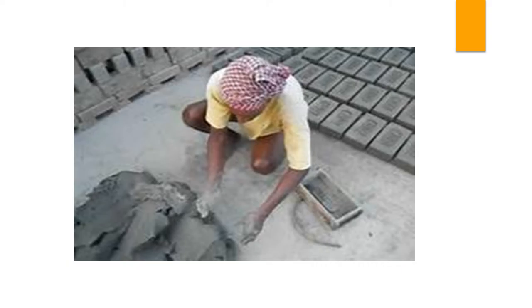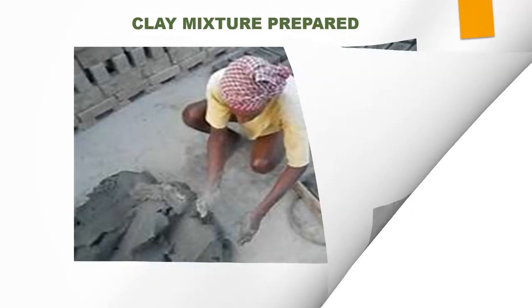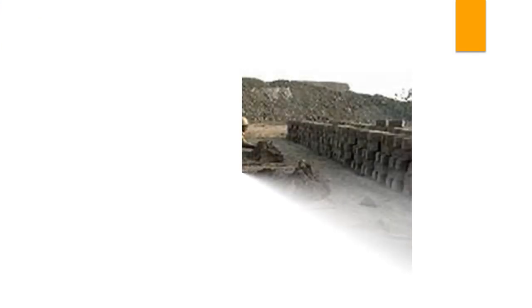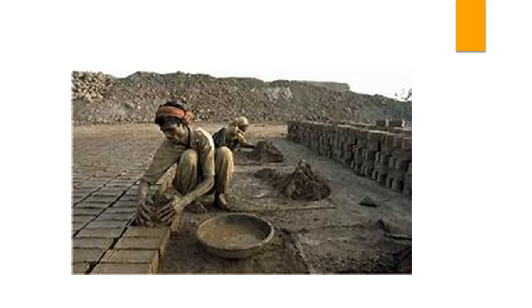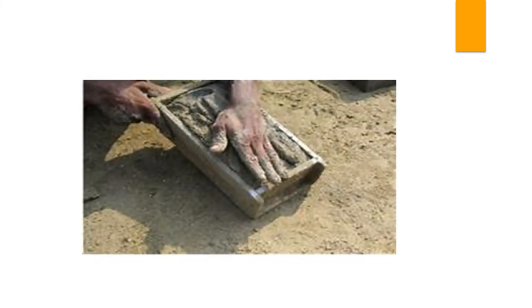Clay which is dug out is made into a mixture using water. This is the second stage in brick making. The third stage is filling the mixture into a mold. A mold is a container which is used to shape and set the clay.